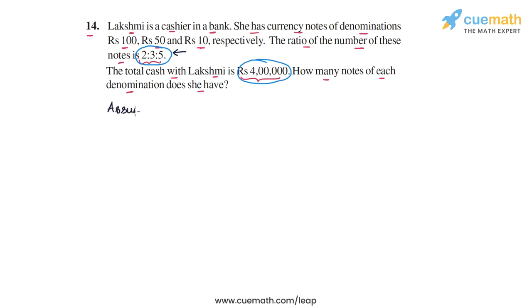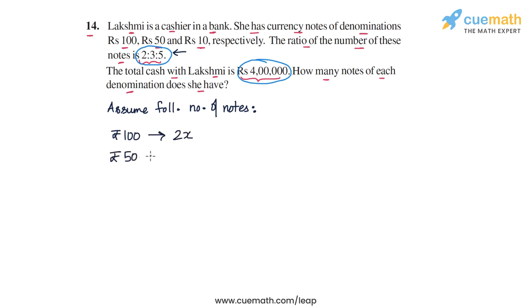So let's start with this assumption. Assume the following number of notes of each denomination: the number of rupees 100 notes is 2x, the number of rupees 50 notes is 3x, and the number of rupees 10 notes is 5x. We take these three terms because the ratio needs to be 2:3:5.